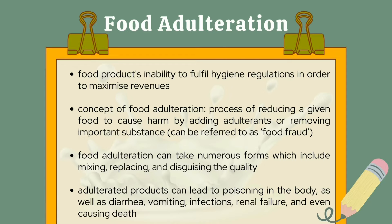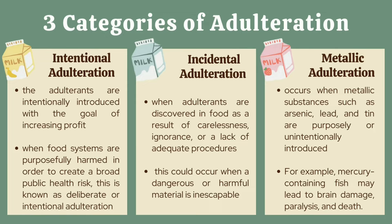Adulterated products can lead to poisoning in the body, as well as diarrhea, vomiting, infections, renal failure, and more seriously, death. Adulteration may be classified into three categories: Intentional Adulteration, Incidental Adulteration, and Metallic Adulteration.